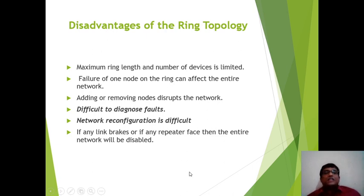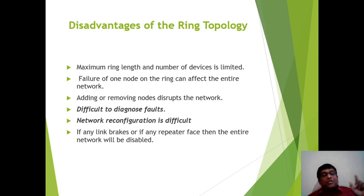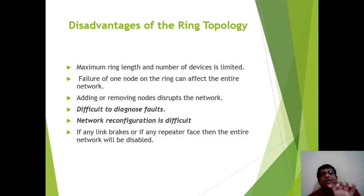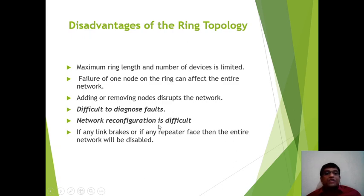Disadvantages of Ring Topology: maximum ring length and number of devices is limited. Failure of one node on the ring can affect the entire network. Adding or removing nodes disrupts the network. Difficult to diagnose faults. Network reconfiguration is difficult. If any link breaks or any repeater fails, the entire network will be disabled.